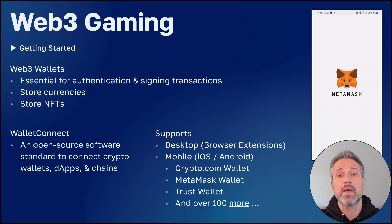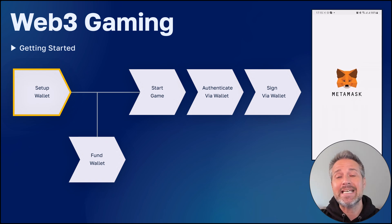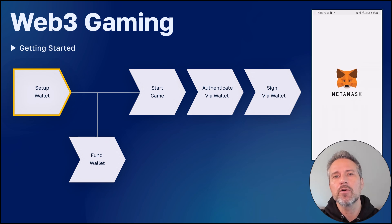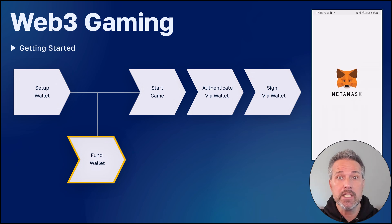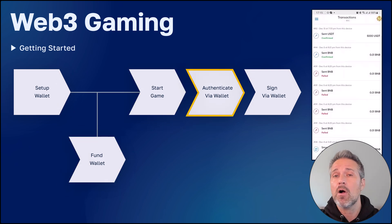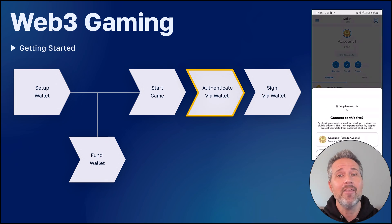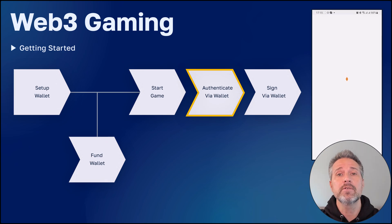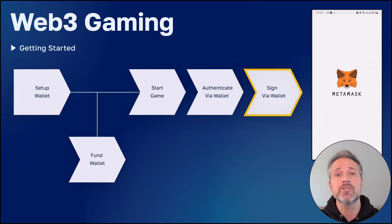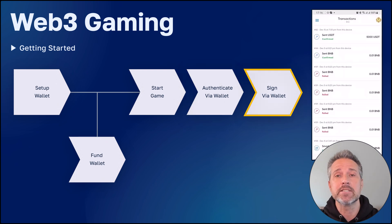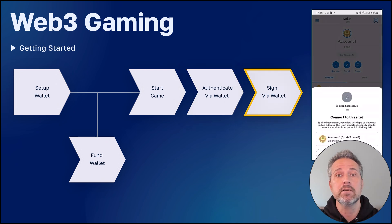And you can see on the right, MetaMask, which was one of the popular examples. The process of getting started in a particular game using the wallet depends, but most of them follow a flow something like setting up the wallet, then maybe funding the wallet if the game needs currency to get started. Then you'd start the game, authenticate using the wallet, and then periodically throughout the life of that game, you'll need to sign certain key transactions — things that are on-chain and immutable.